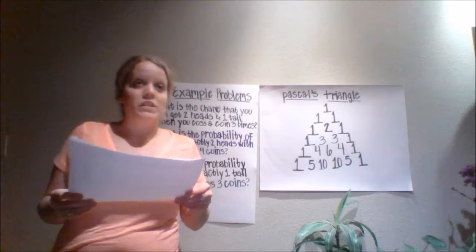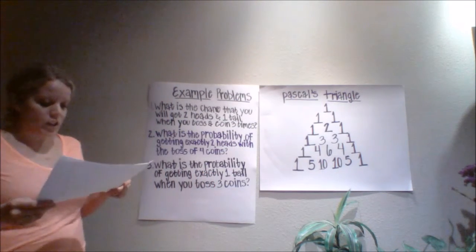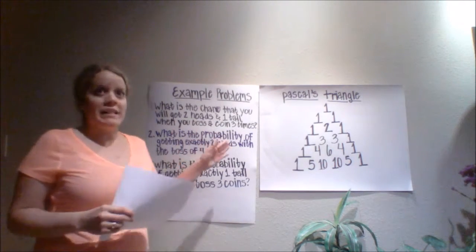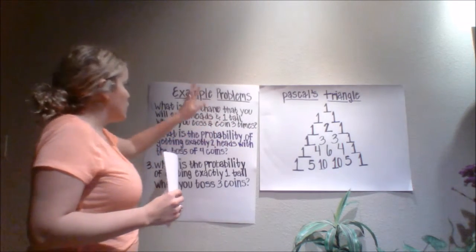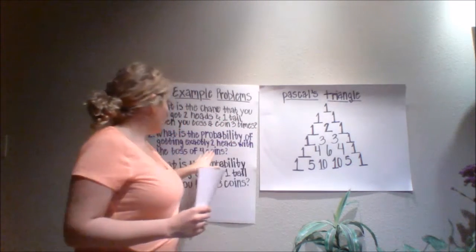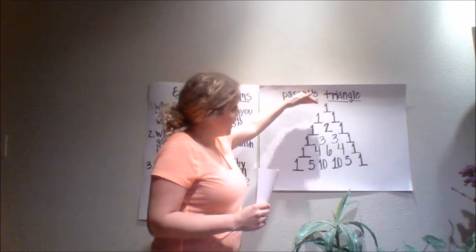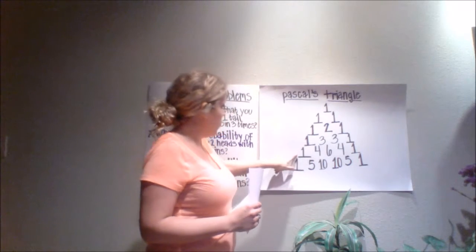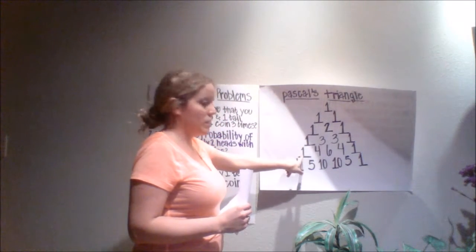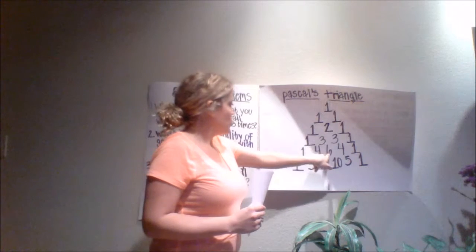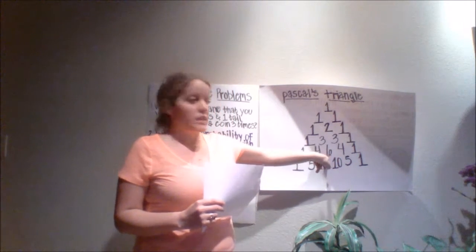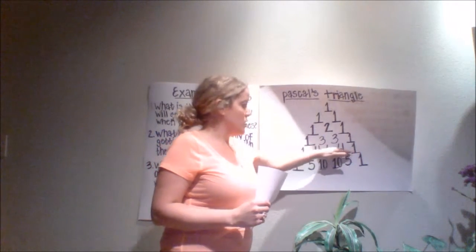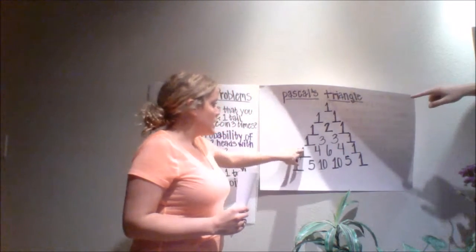Another problem: what is the probability of getting exactly two heads with a toss of four coins? Now we use Pascal's triangle as our second strategy. It says four coins and two heads, so we count down — remember this is row 0 — 0, 1, 2, 3, 4. And two heads means we go over: 0, 1, 2. So this number 6 is going to be our numerator. Then we add all of the numbers in that row, which gives us a denominator of 16. So the answer is 6 sixteenths.